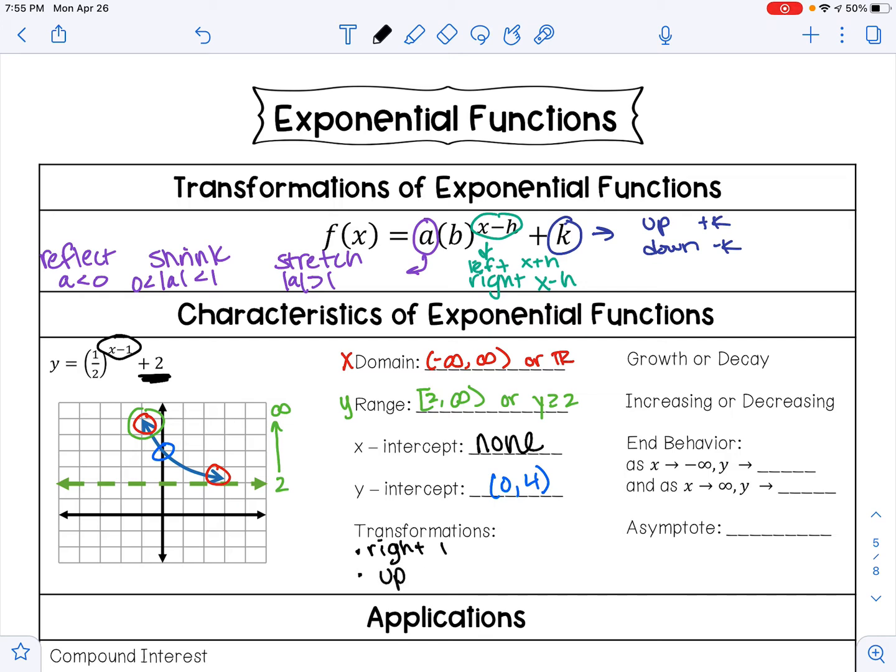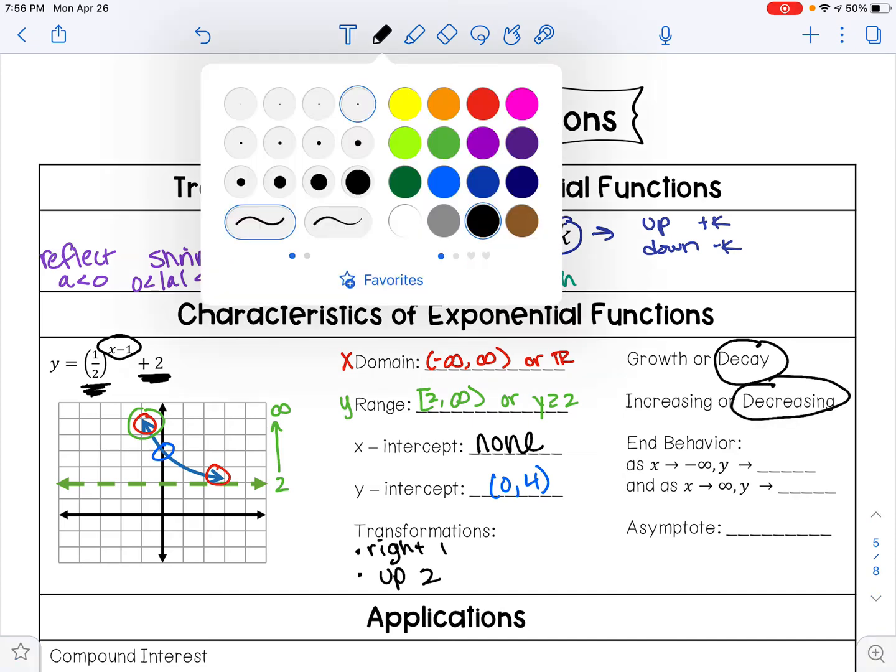For growth or decay, that depends on your b value. Here my b value is between 0 and 1, so that represents exponential decay. When I trace this curve from left to right, the curve is going down, so that means that this is decreasing.